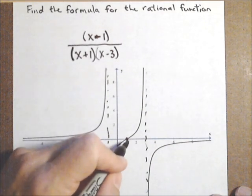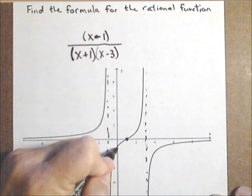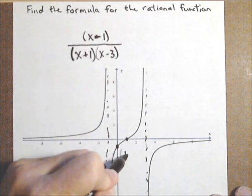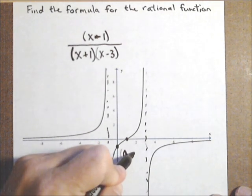Lastly, we want to see if there's another point not on the x axis that we can identify. We have a y intercept here of roughly 0, negative 1.